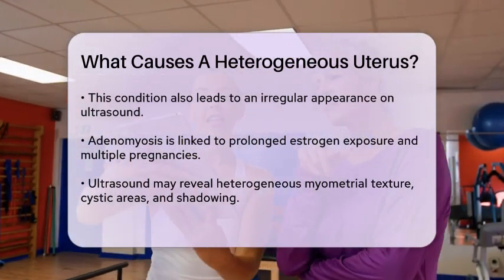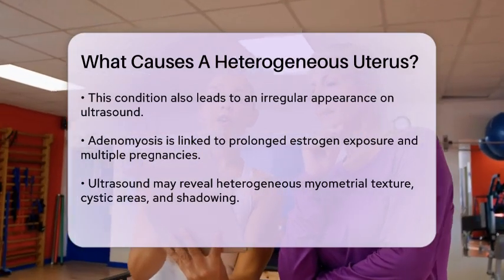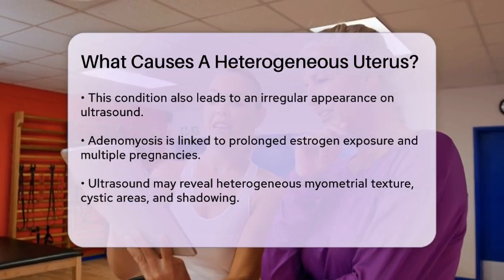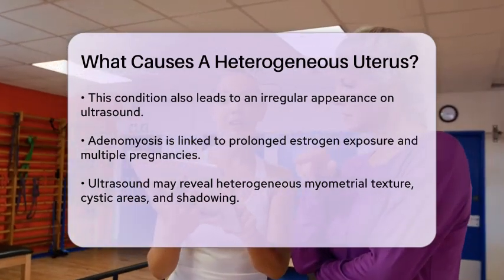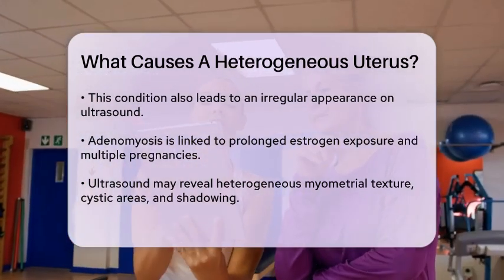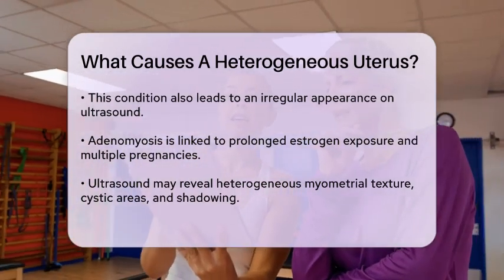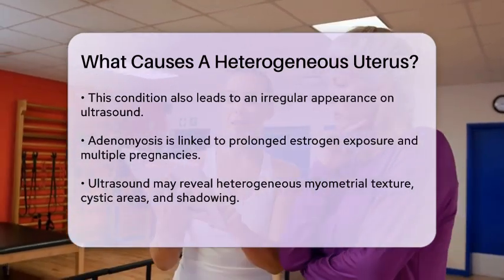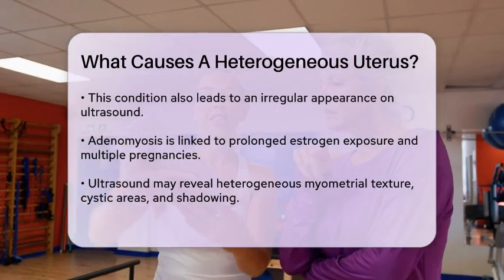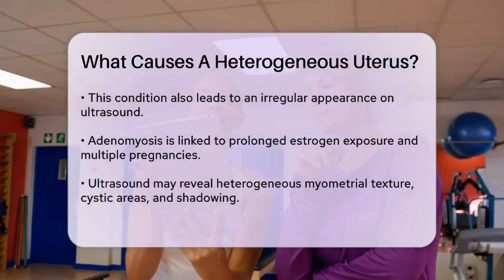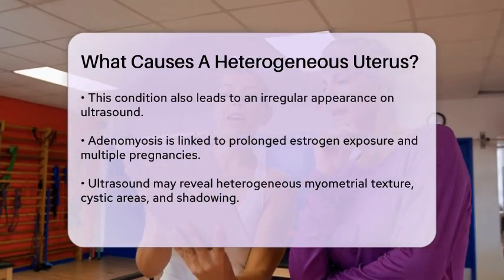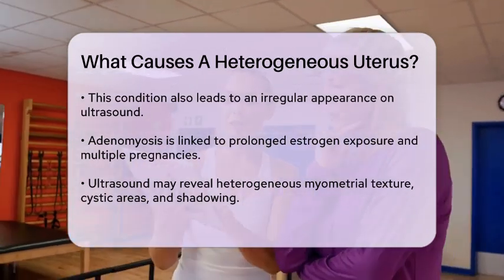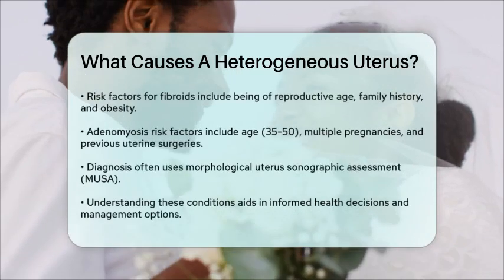Both fibroids and adenomyosis have specific risk factors. For fibroids, being of reproductive age, having a family history, starting your period early, obesity, and a diet high in red meat but low in green vegetables, fruit, and dairy can increase your risk. For adenomyosis, risk factors include being between the ages of 30 to 50, having multiple pregnancies, previous uterine surgery, and shorter-than-usual menstrual cycles.